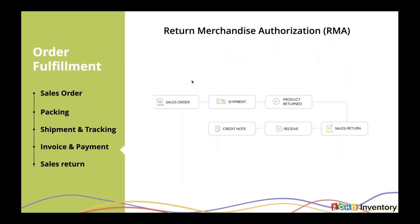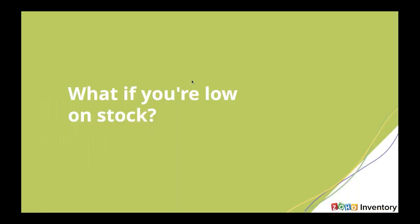Another point where customer experience matters is when a customer has to return a product — you need to make sure that the return happens in a very smooth way. For that, we have something called RMA, or the sales return module of Zoho Inventory, which allows you to capture all the return processes involved when a customer returns a product to you.